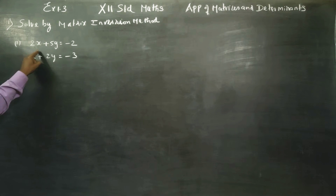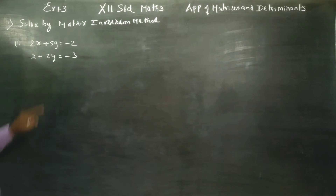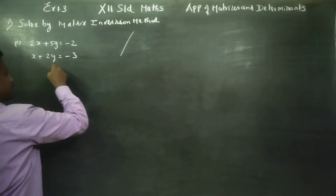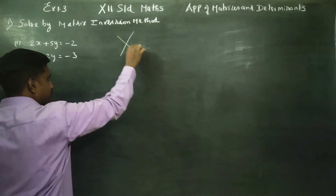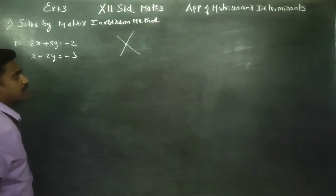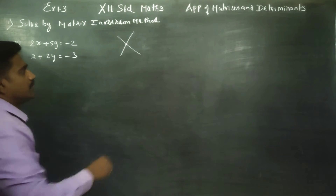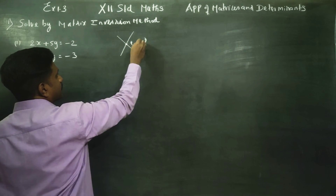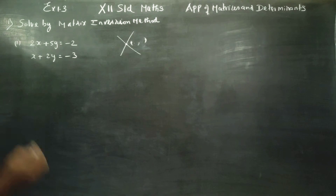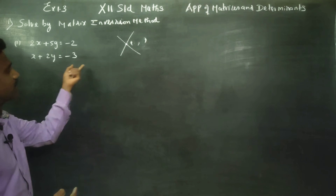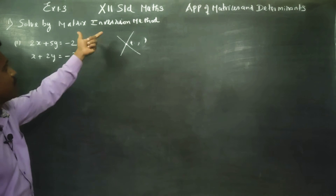Each equation like x plus y is a straight line. The two straight lines are going to meet at a point. If they meet at a point, the x-coordinate and y-coordinate of that point are going to be the solution.